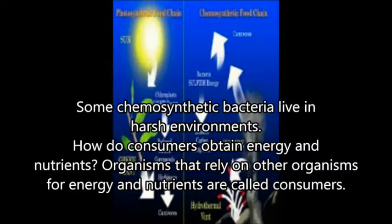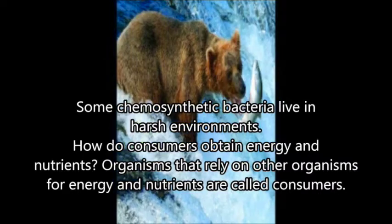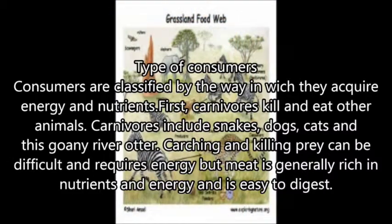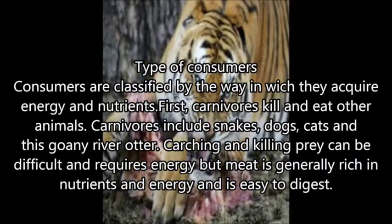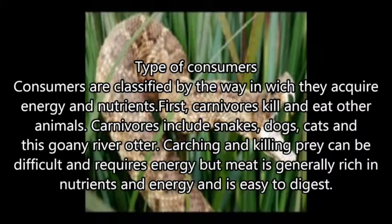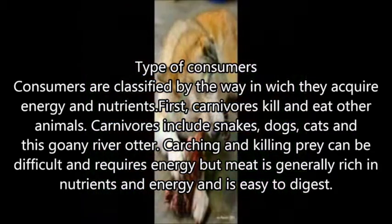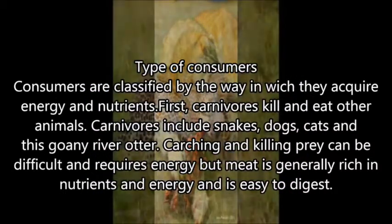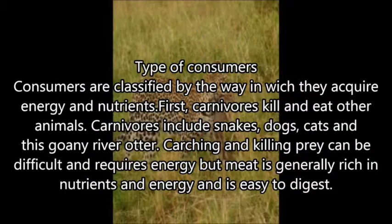Organisms that rely on other organisms for energy and nutrients are called consumers. Consumers are classified by the ways in which they acquire energy and nutrients. First, we have carnivores — they kill and eat other animals. Carnivores include snakes, dogs, and cats.